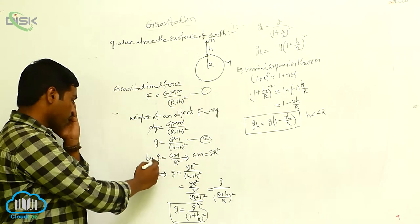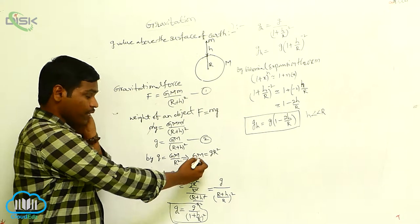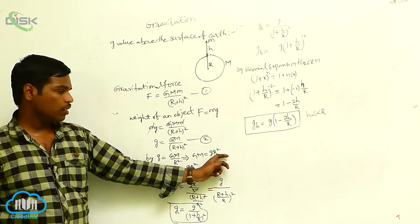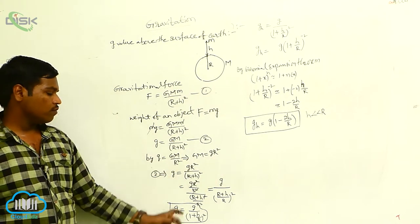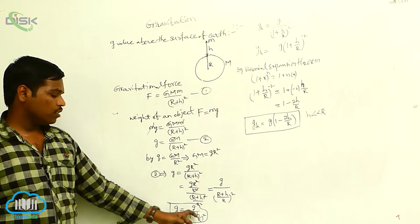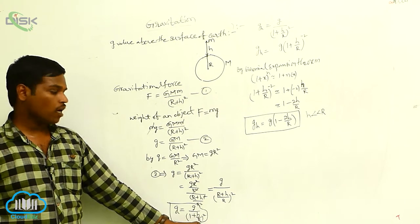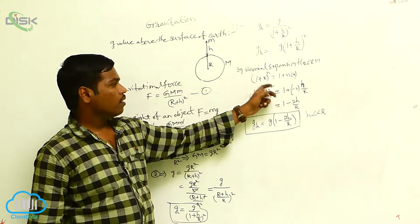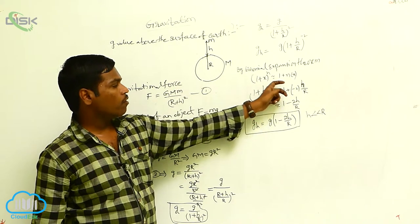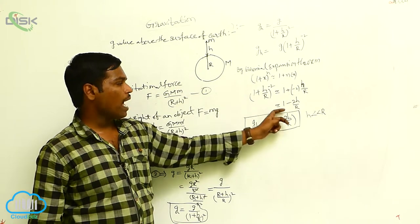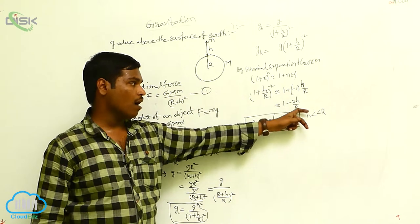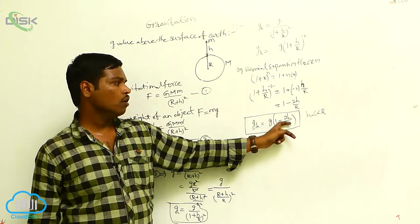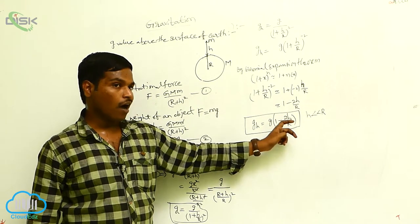Since g equals GM over r squared, we can write GM equals g times r squared. Substituting this, we get g_h equals g divided by (1 plus h/r) squared. By the binomial expansion theorem, we can write (1 plus h/r) to the power minus 2 as approximately 1 minus 2h/r. That is, g_h equals g times (1 minus 2h/r).